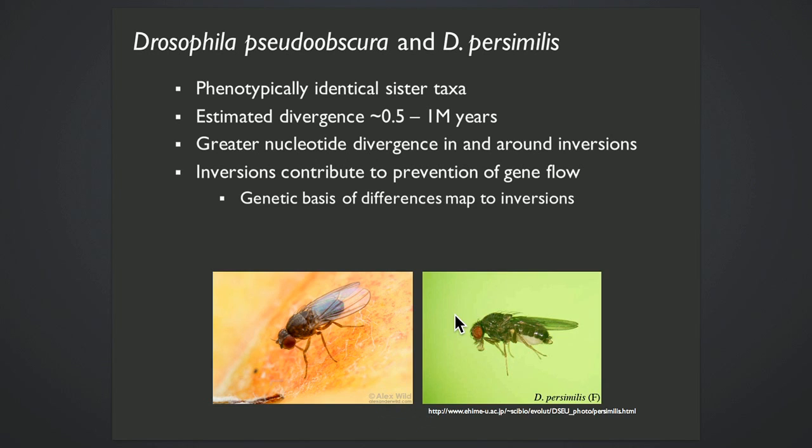And I'm tackling this using the sister species pair Drosophila pseudoobscura and persimilis. These diverged about half to one million years ago, and the inversions that differ between these species contribute to their maintenance as distinct species. They exhibit greater nucleotide divergence in and around the inversions.